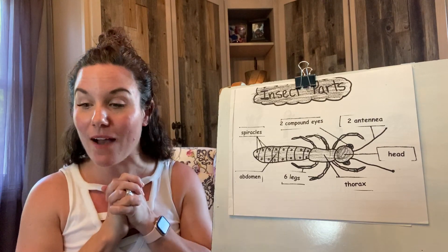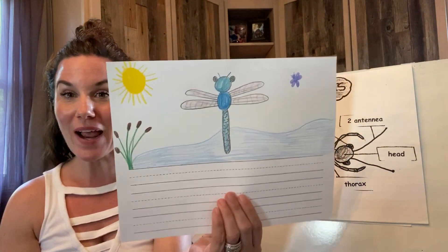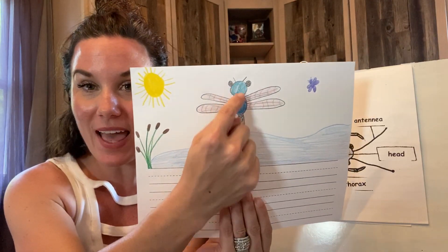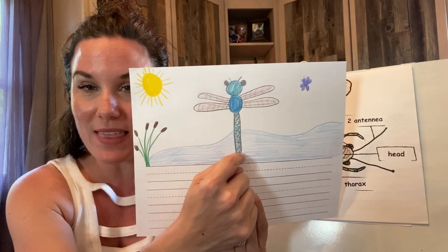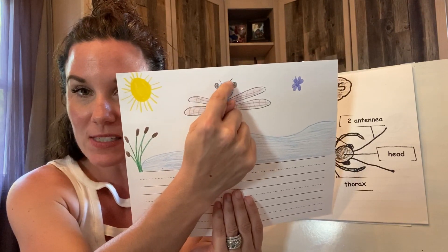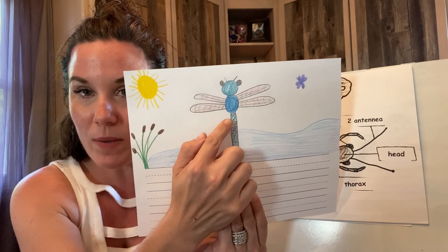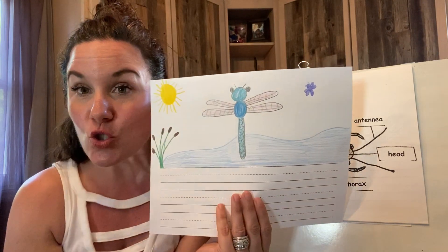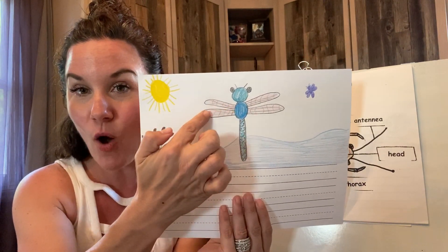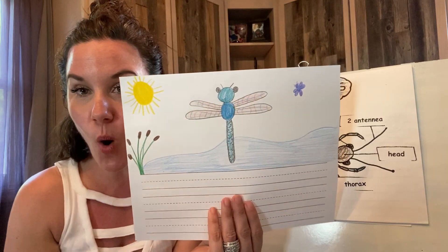Now you have your dragonfly. Here on our dragonfly, we made the head, we made the thorax, we made the abdomen, we made the compound eyes, we made their short little antennas, we made their spiracles. And dragonflies are an insect that have wings — they have four wings.